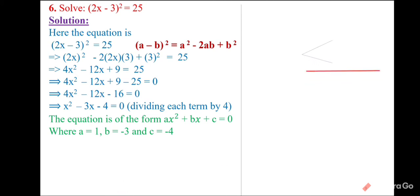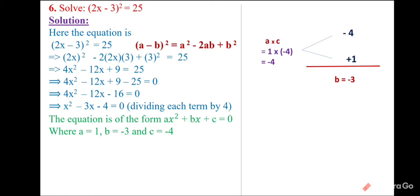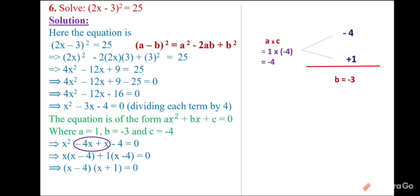Finding factors: a × c = 1 × (−4) = −4 and b = −3. The pair −4 and +1 works: (−4)(+1) = −4 and (−4) + 1 = −3. Splitting and grouping: x(x − 4) + 1(x − 4) = 0, so (x − 4)(x + 1) = 0. Therefore x = 4 and x = −1 is the solution of the equation.